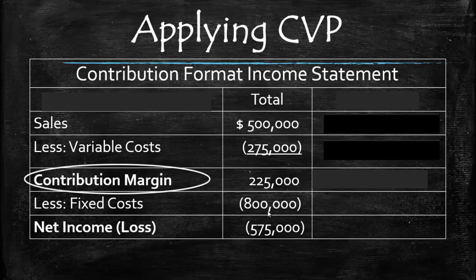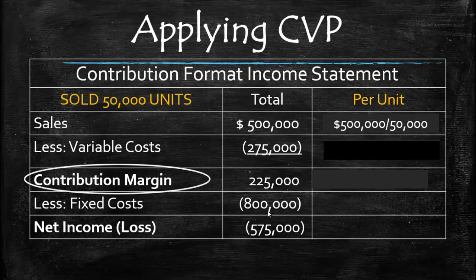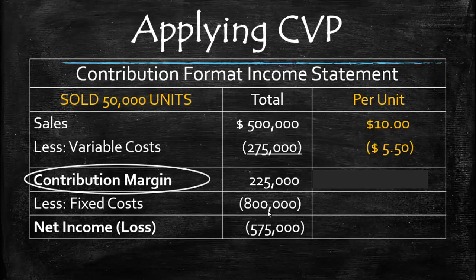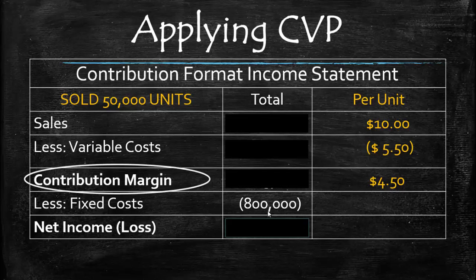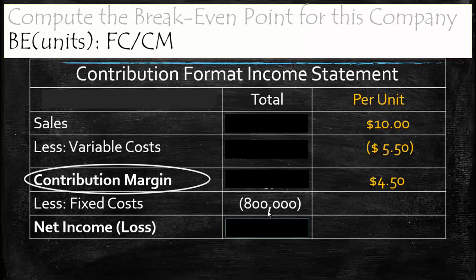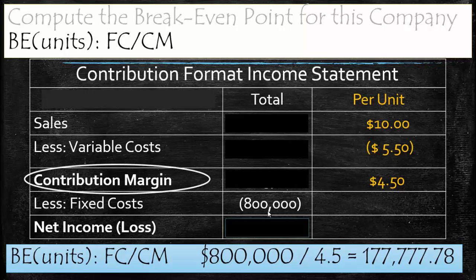Based on sales of 50,000 units, we compute per unit data: sales per unit equals $10, variable cost per unit equals $5.50, and contribution margin per unit equals $4.50. Break-even equals fixed cost divided by contribution margin per unit. With fixed costs of $800,000 and a contribution margin of $4.50, break-even is 177,777.78 units. Since we cannot sell fractional units and rounding down would result in a loss, we round up to 177,778 units.